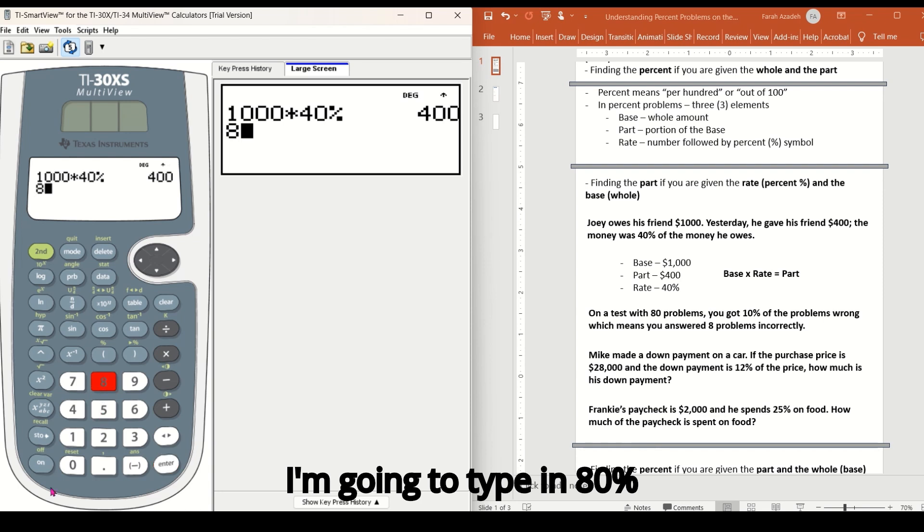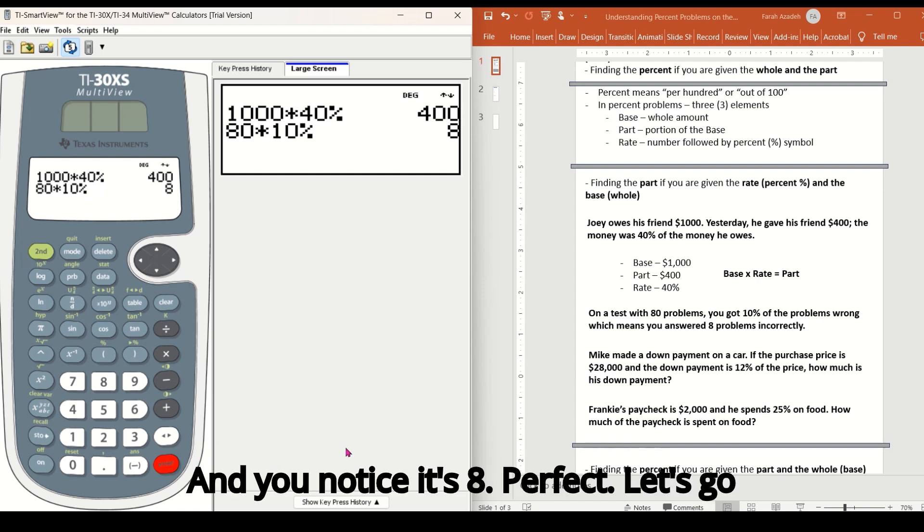So I'm going to type in 80 times 10%. Second key, open parentheses, enter. And you notice it's eight. Perfect. Let's go to the next one.